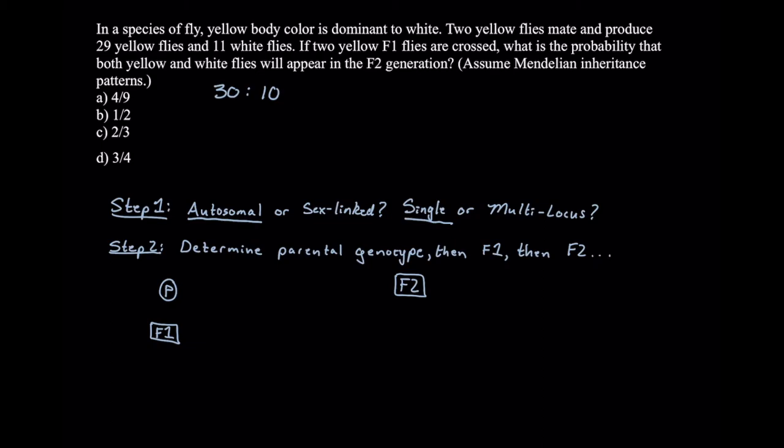Let's draw out a Punnett square for the F1 generation. We don't know our parental genotypes yet, but we can figure them out because three of these squares have to code for the dominant trait, yellow body color, and one has to code for the recessive trait, white body color. Since most loci are named after the recessive trait, we'll use capital W to denote a yellow allele and little w to denote a white body allele. We know there's at least one big W allele in these three boxes and at least two little w's in this box.